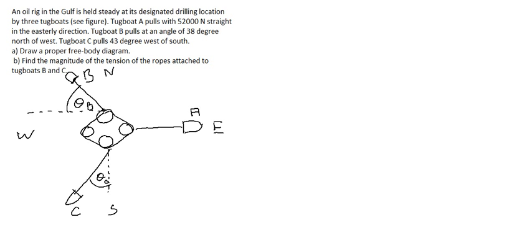An oil rig in the sea is held steady at its designated drilling location by 3 tugboats. Tugboat A pulls with 50,000 N straight in the easterly direction. Tugboat B pulls at an angle of 38 degrees north of west. Tugboat C pulls 43 degrees west of south. Draw a proper free body diagram, then find the magnitude of the tension of the ropes attached to tugboats B and C.